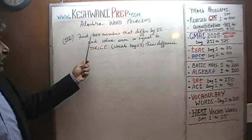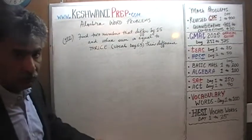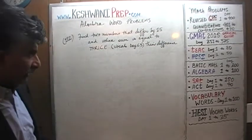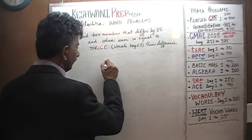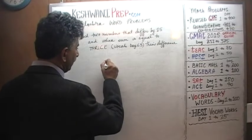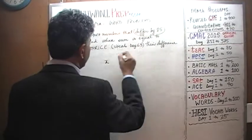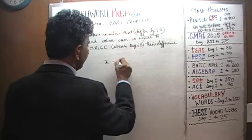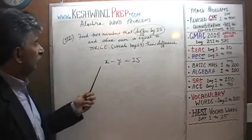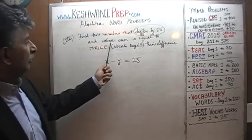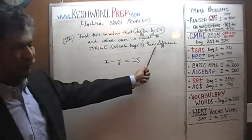It says: find two numbers that differ by 15. So we have two numbers that differ by 15. Let's call the two numbers x and y. We are told that they differ by 15 — their difference is 15 — so x minus y equals 15. That's our first equation. We are further told that whose sum happens to equal to thrice their difference.